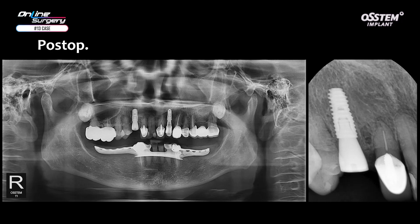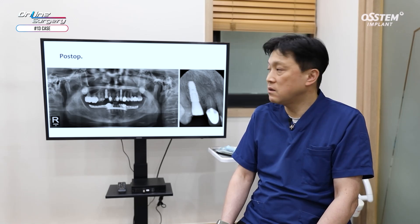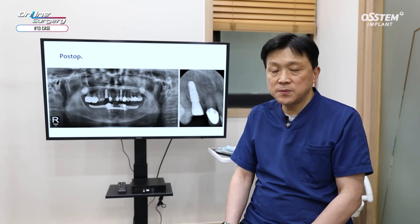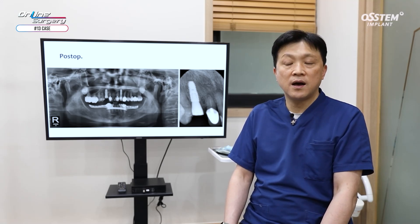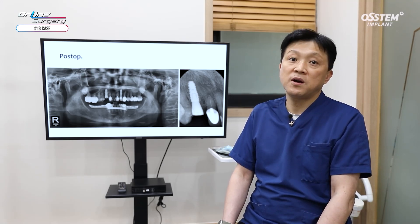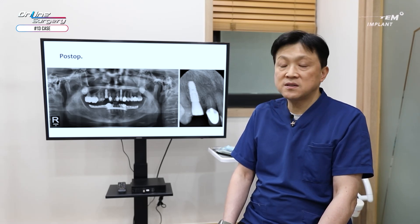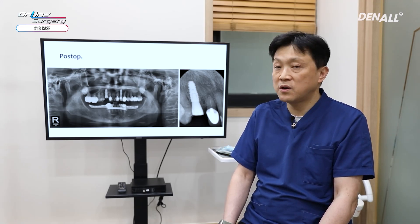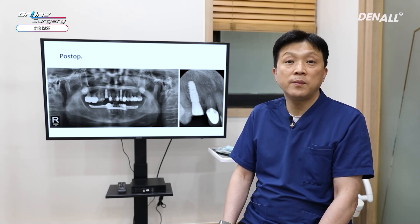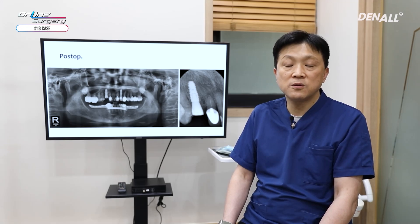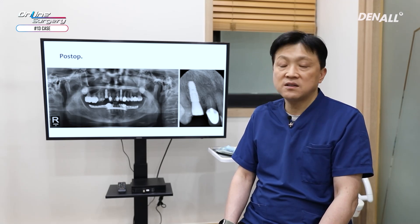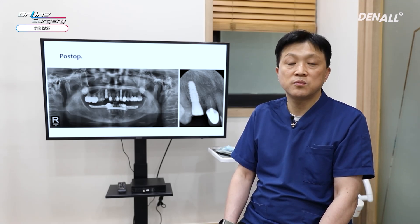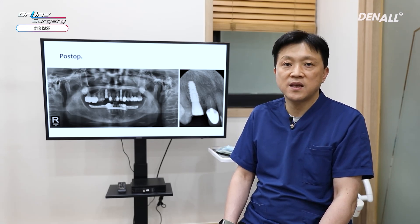On the standard image, the implant position looks appropriate. A KS3 4.0 x 10 mm implant was used. In the case of upper anterior, implant diameter choices are quite limited. With the KS3 4.0 x 10 mm deep connection implant, stability between implant and abutment increases, reducing the possibility of screw loosening. Even with a smaller diameter, it can withstand stronger occlusal forces or guidances. Deep connection implants are normally used in lower anterior or upper anterior areas where wider diameter implants cannot be placed.